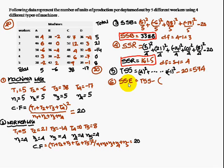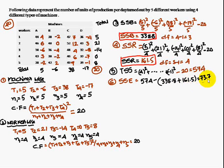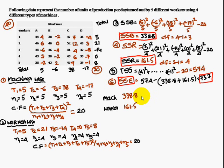The error sum of squares (SSC) is obtained by subtracting SSB and SSR from TSS: 574 minus (338.8 + 161.5), giving SSC = 73.7.